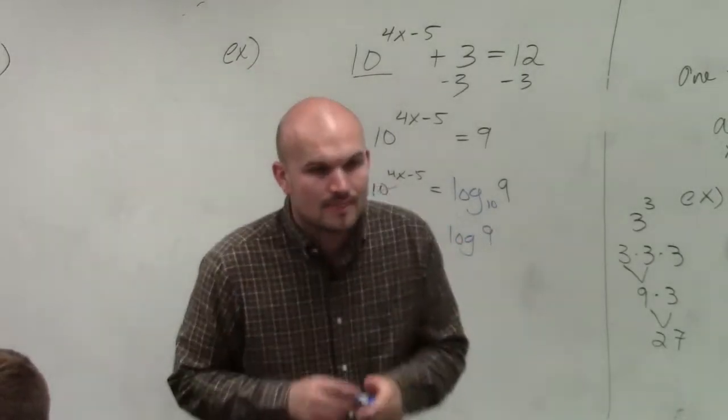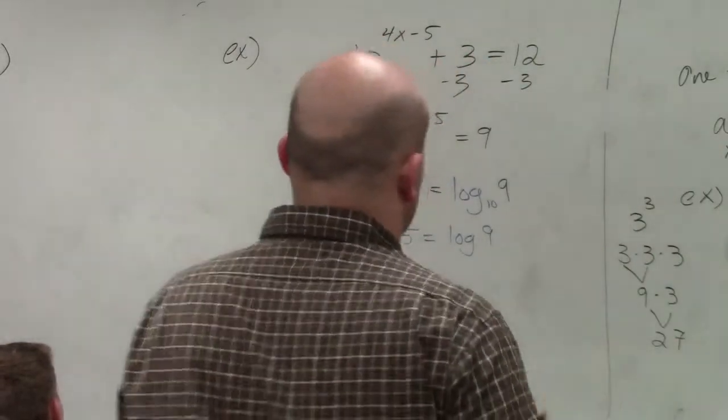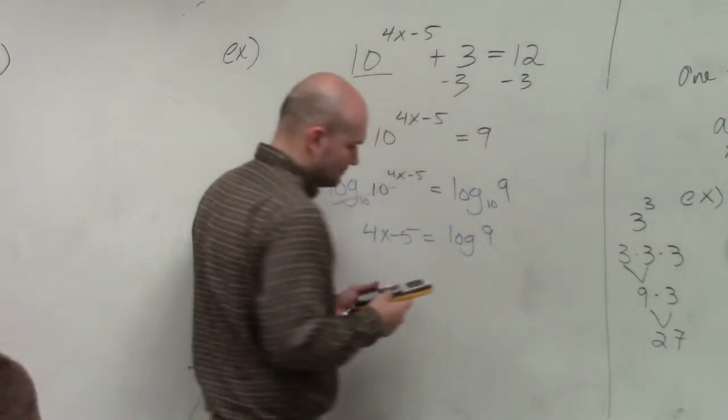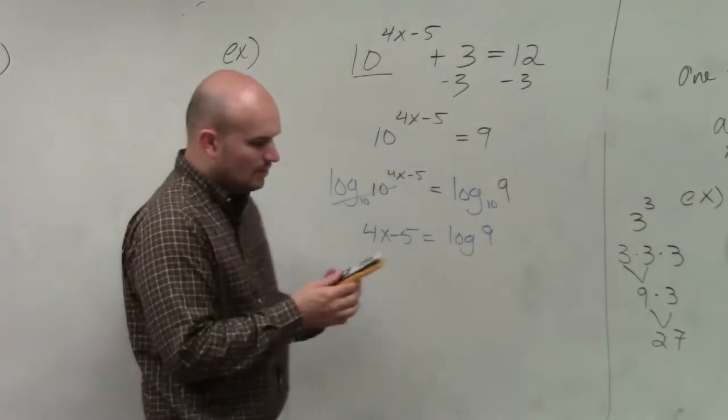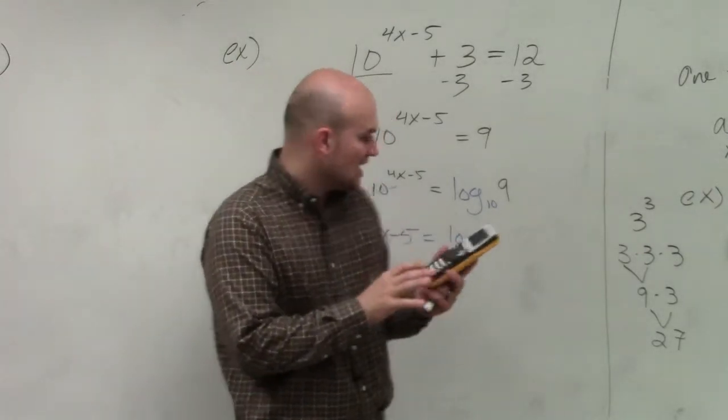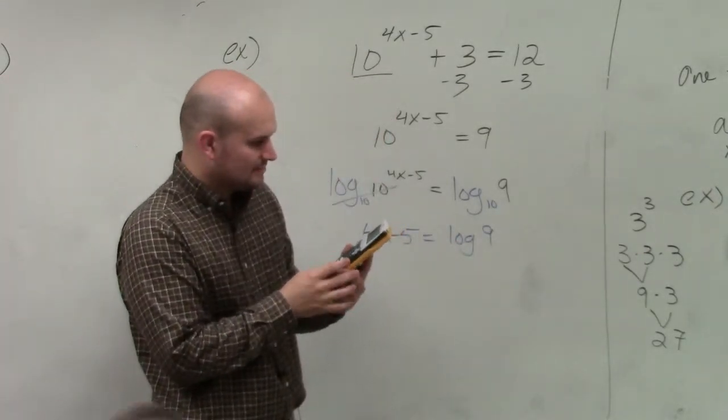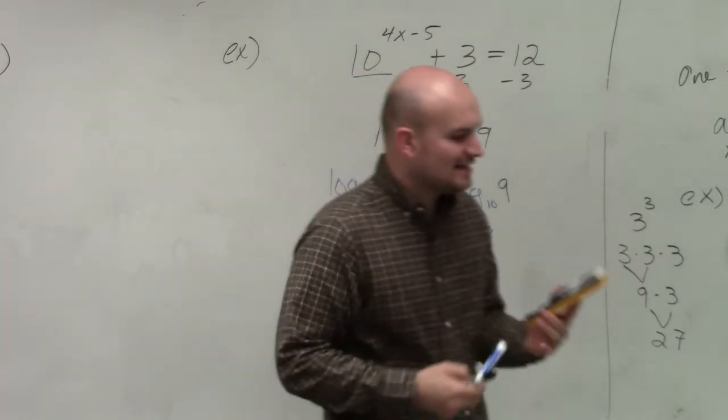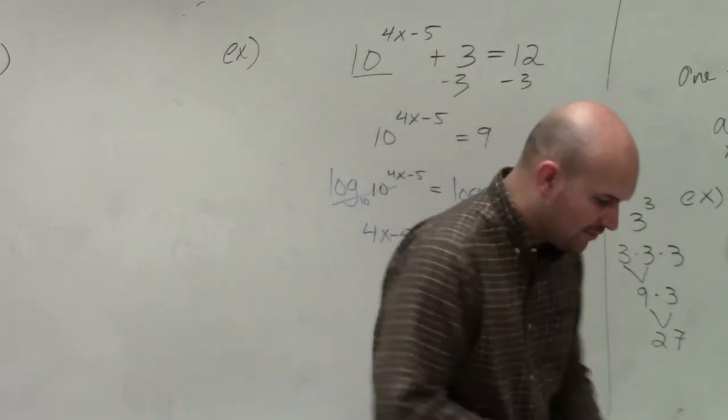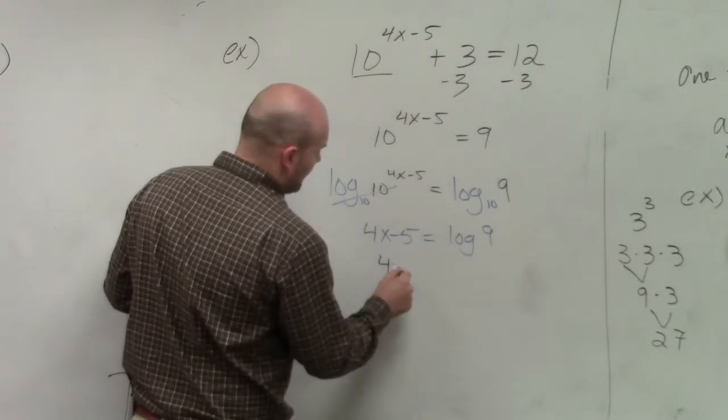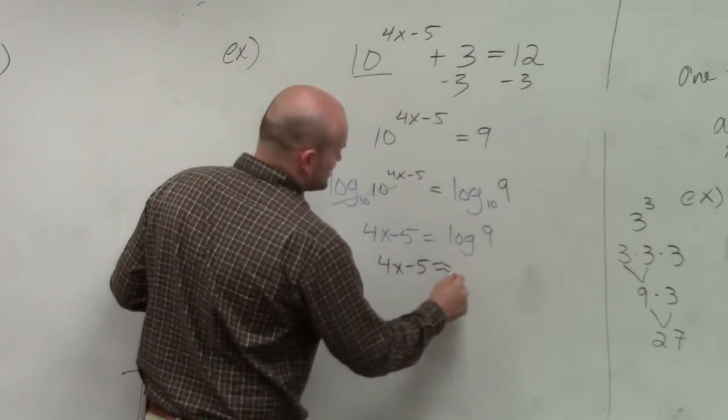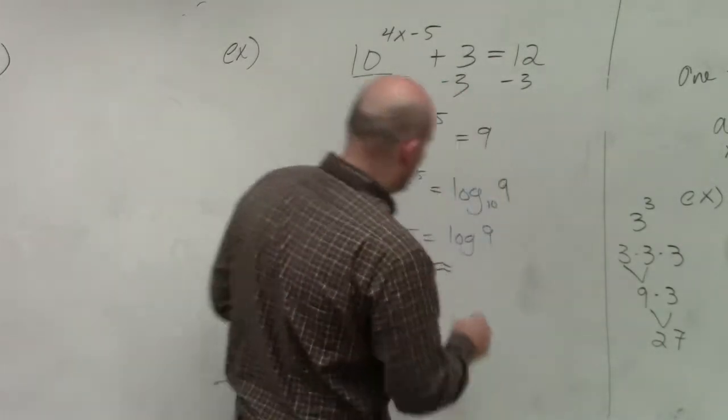So now, since you're dealing with log base 10, you guys can just take the log of 9, which is 0.954. So if I round that, I have 4x minus 5 is approximately 0.95.